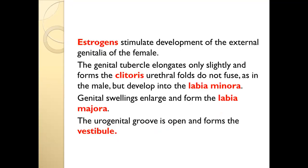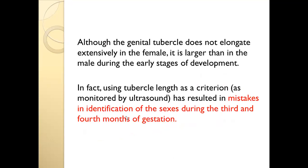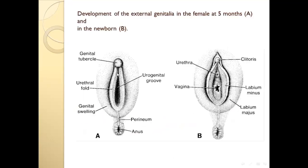In the female, the genital tubercle does not elongate as in the male — it becomes the clitoris. The urethral folds do not fuse and form the labia minora. The genital swellings form the labia majora. The groove does not fuse and forms the vestibule. The opening to the vagina is covered by the hymen membrane.